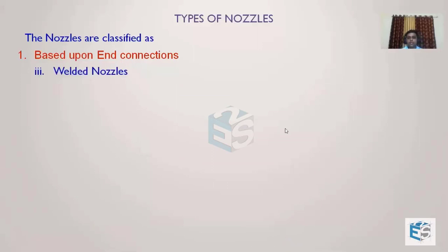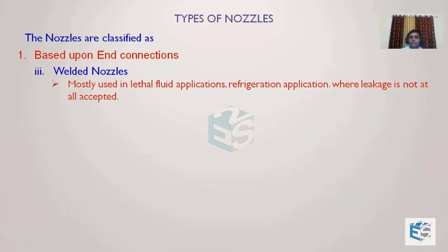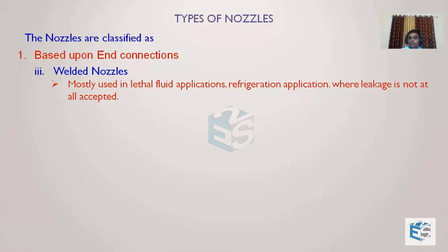The third type is welded nozzles. Once a nozzle is welded to the attached piping or instrument, it is almost impossible to disconnect without cutting or applying heat. These are not commonly used — they are the last option where leakage is absolutely not permissible. In very high-pressure or lethal applications, such as refrigeration plants using ammonia as refrigerant, welded nozzles are used because ammonia leakage can be fatal.